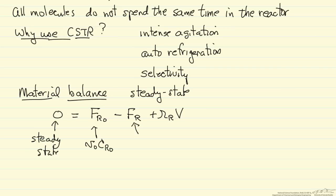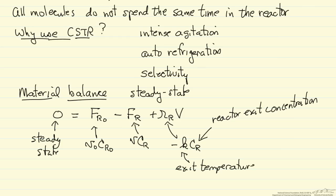And then likewise leaving is a volumetric flow rate leaving, which could be different, times the concentration in the reactor, which is the same as the concentration leaving. This rate of reaction, if it were a first order reaction for the reactant R, would look like this, where, remember, this is the reactor exit concentration. Because the exit concentration is the same as the concentration in the reactor. And this is evaluated at the exit temperature, which is a constant.